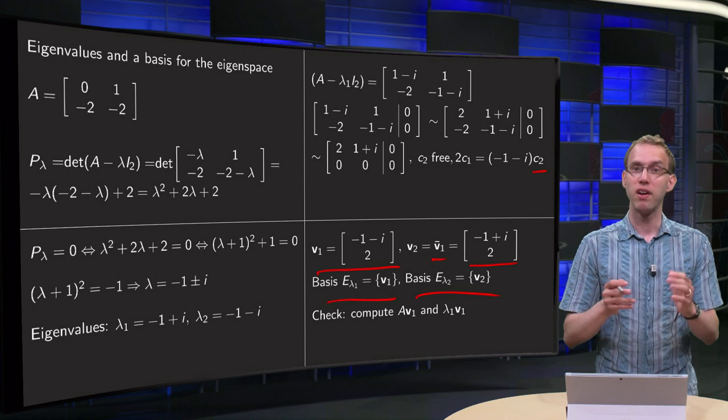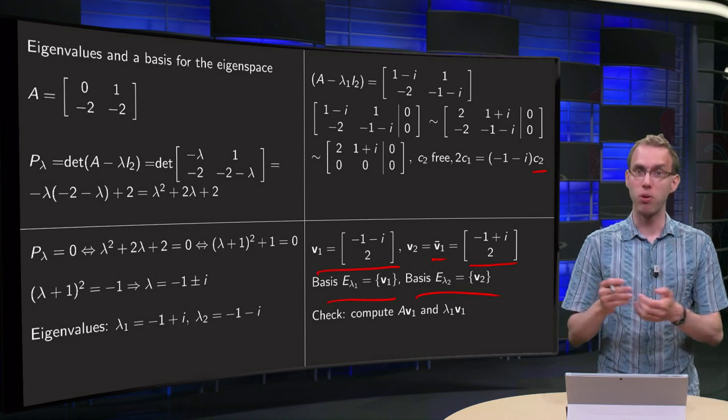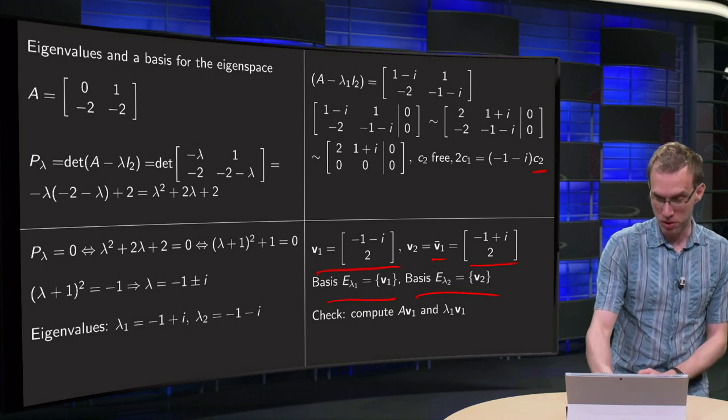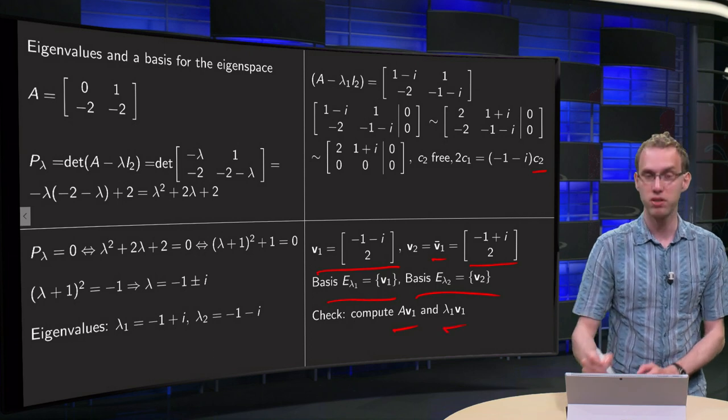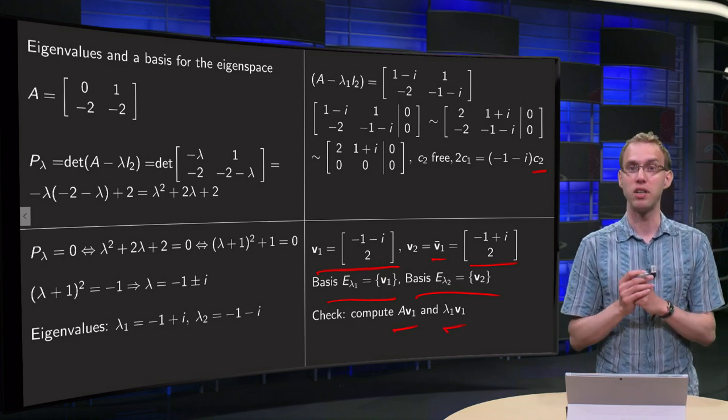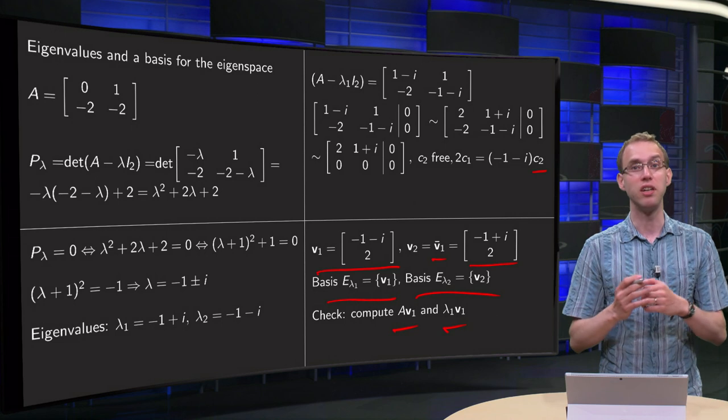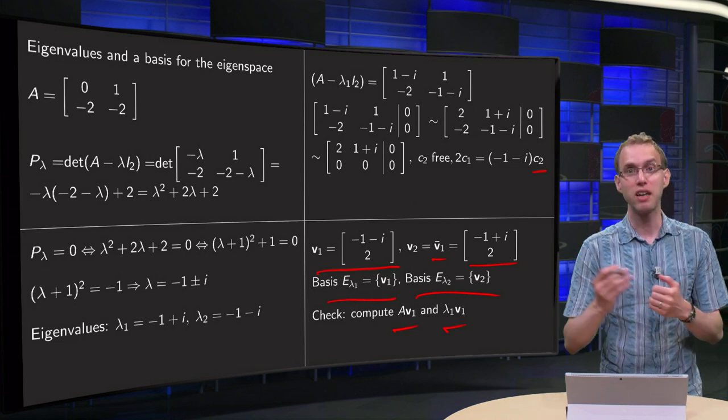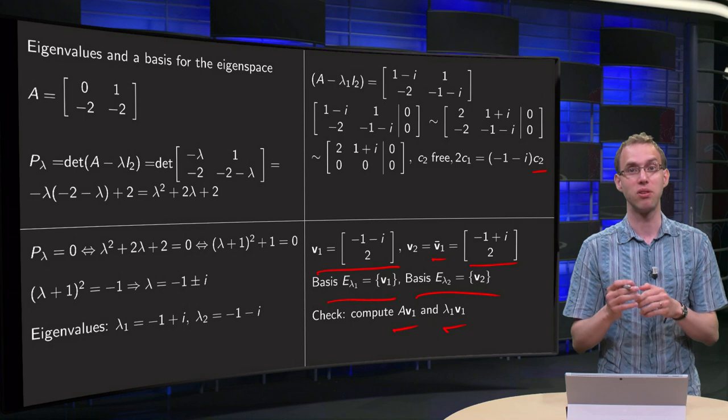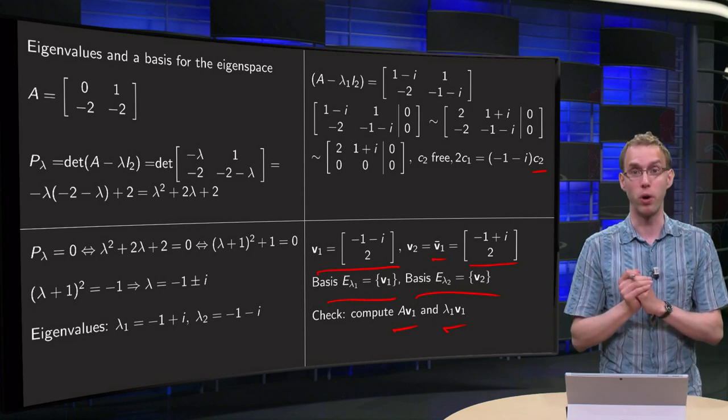So there we have the eigenvalues, the eigenvectors, and of course as a final check you can always compute A times v1 and lambda times v1, and those have to be equal. As you see, finding eigenvalues and eigenvectors in the complex case is the same as in the real case, it's only a bit more work.